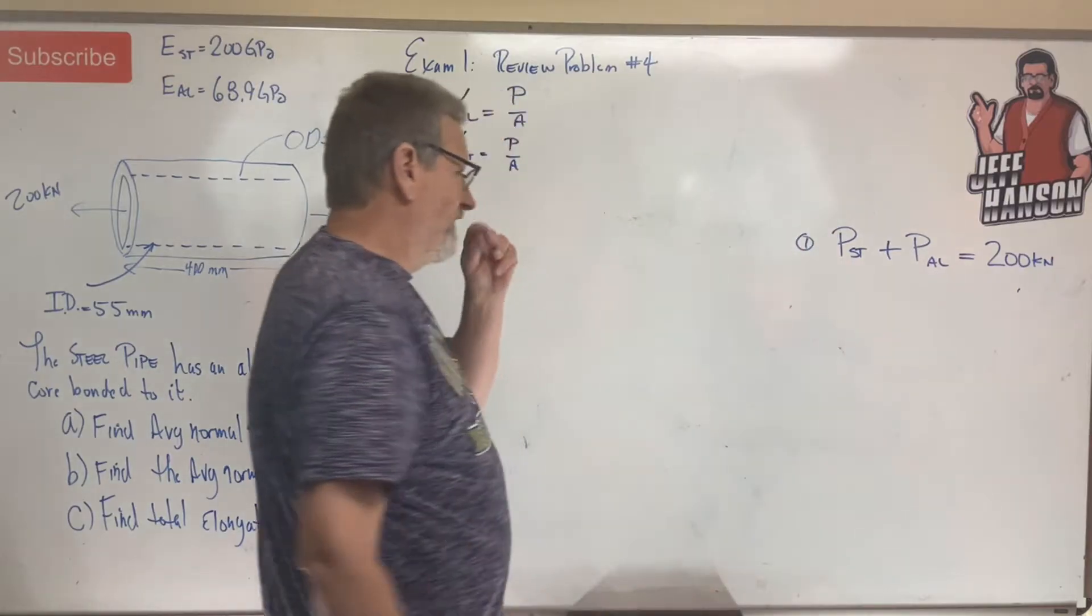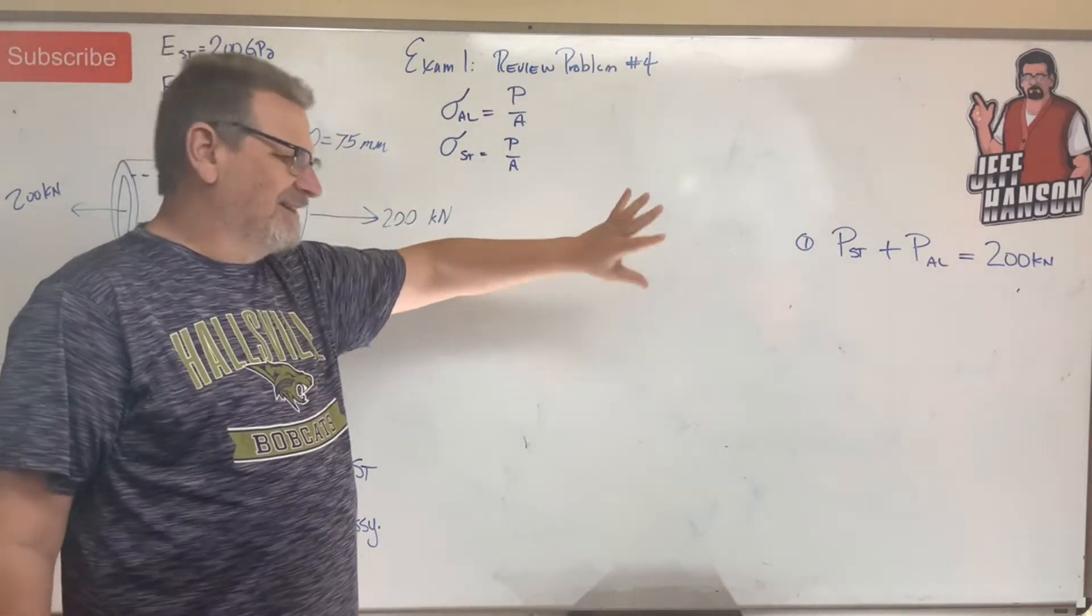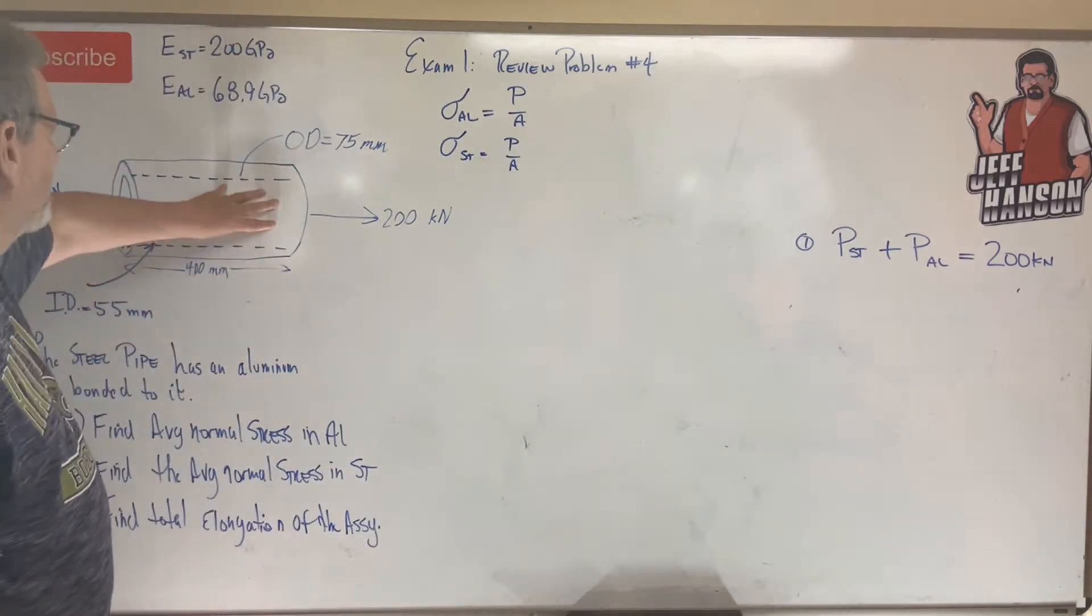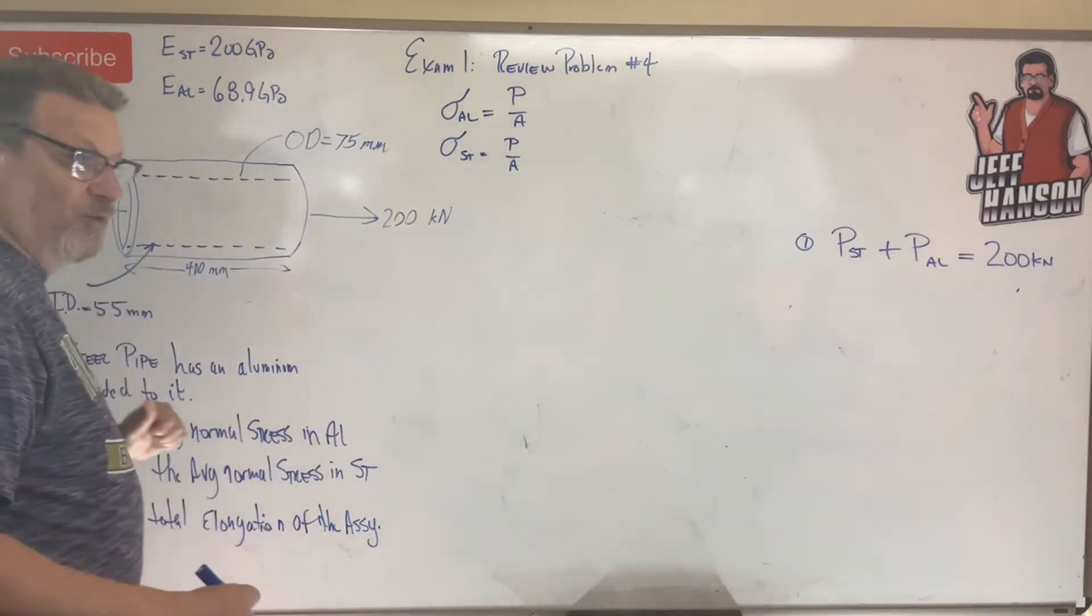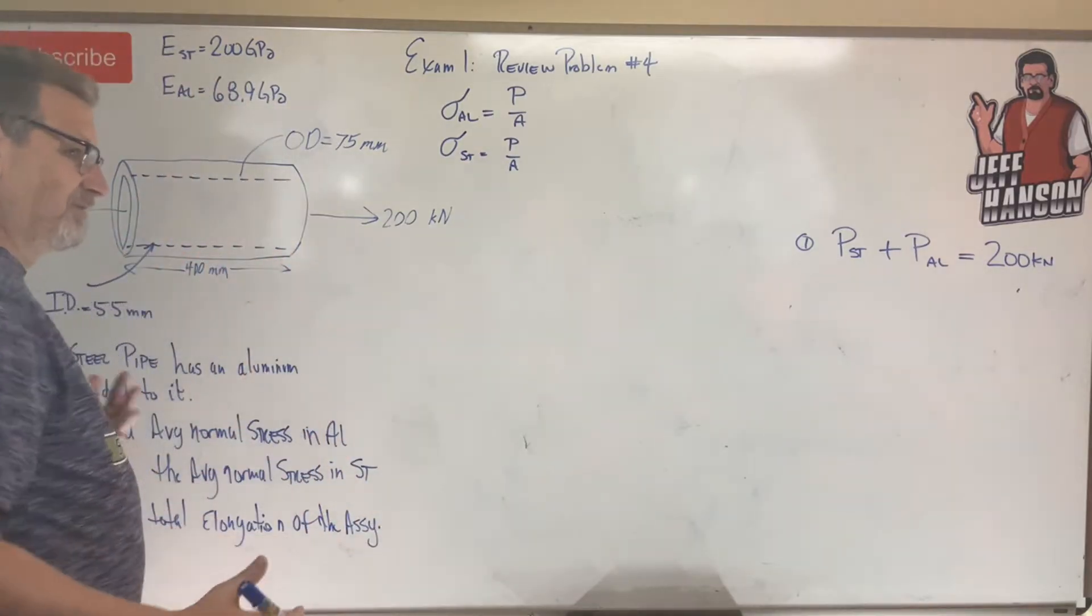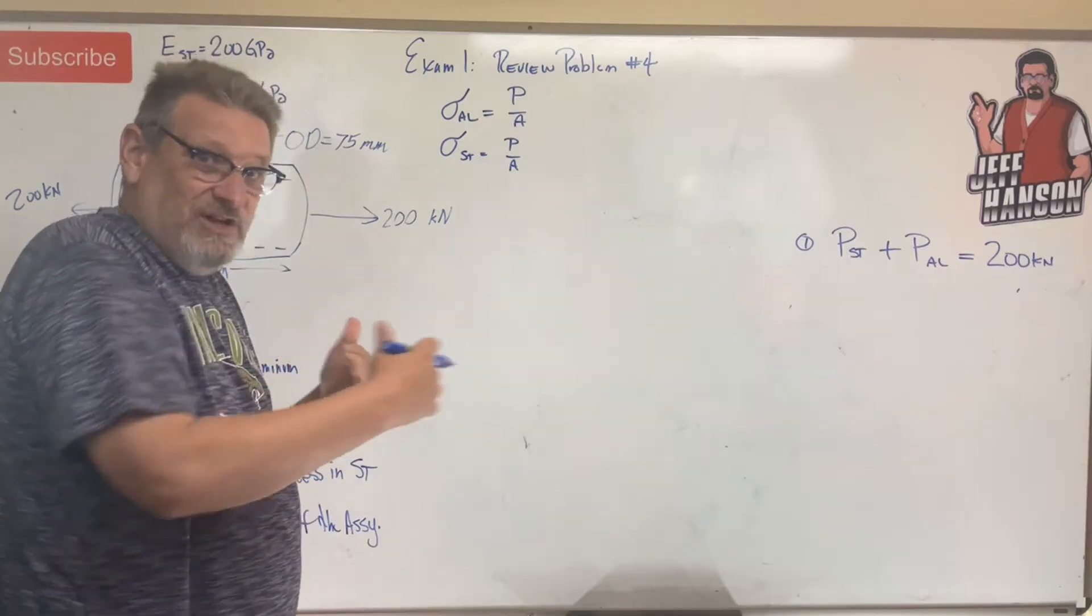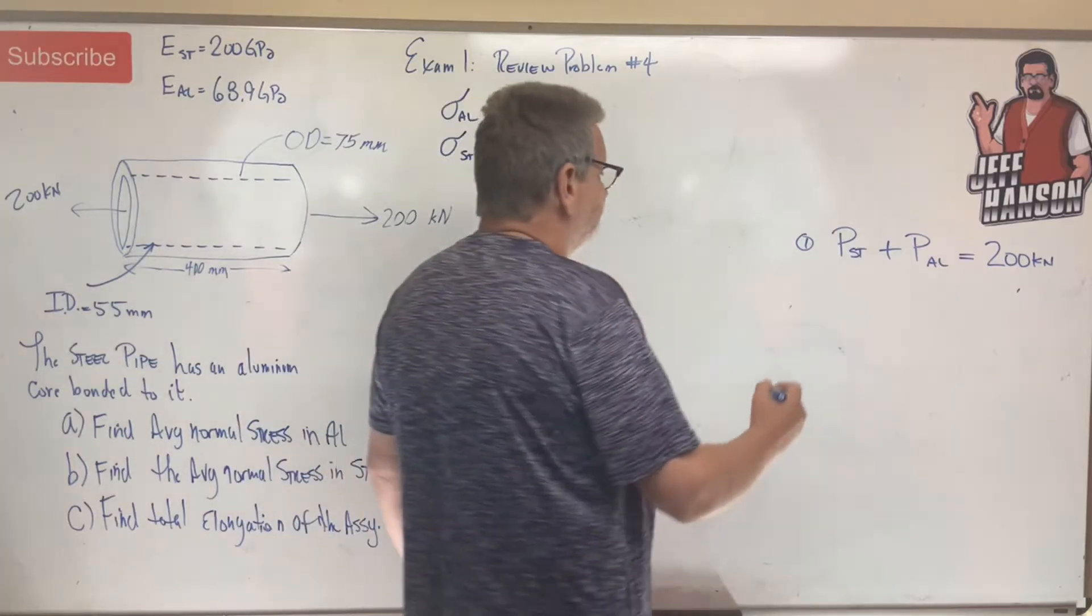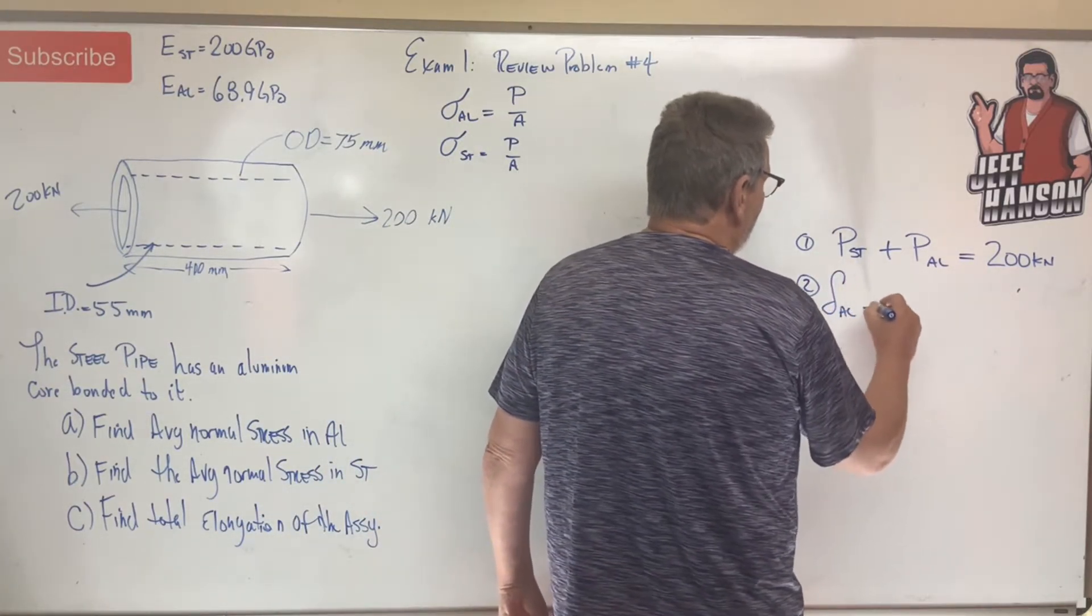Number two, these are logic equations. The next compatibility equation is, look at this thing. If I stretch it, what do I know about the stretch in the aluminum versus the stretch in the steel? Well, since they're bonded together, if one stretches an inch the other one has to stretch an inch, right? They have to stretch the same amount.